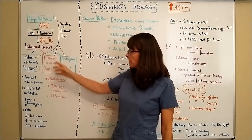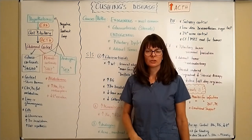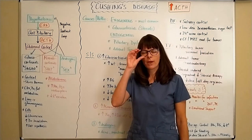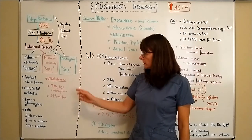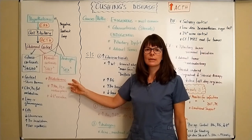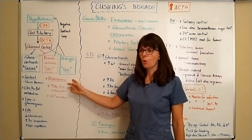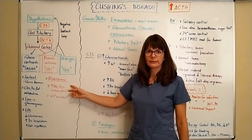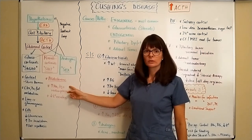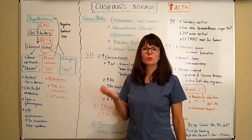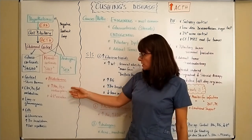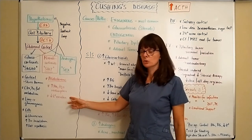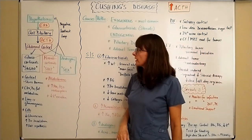For salt or mineralocorticoids, think about aldosterone — aldosterone is a major player in the RAS system, which is the renin, angiotensin, and aldosterone system. Under normal circumstances, aldosterone is released when blood pressure is low. It causes increased reabsorption of sodium and water at the adrenal cortex so that blood pressure can be restored by increasing blood volume. In exchange, at the renal tubules, potassium is being excreted. Then we have our androgen sex hormones.